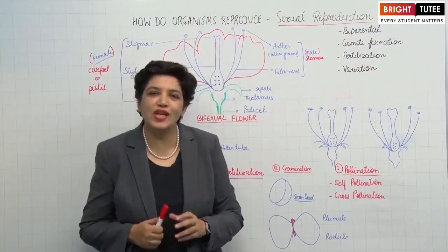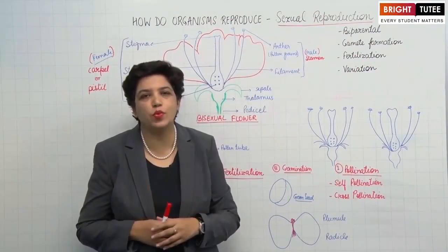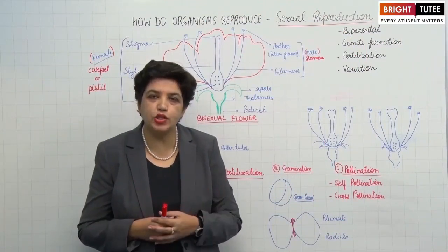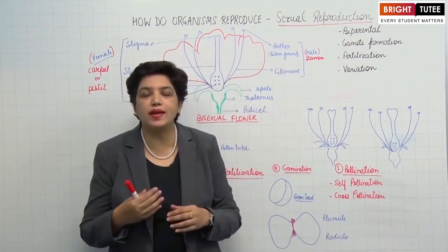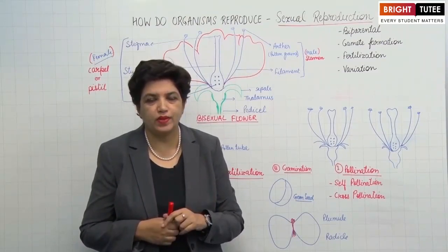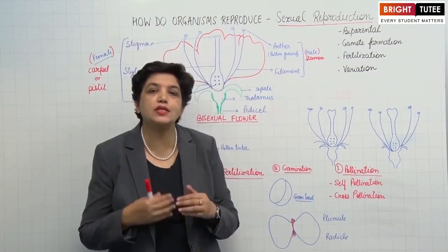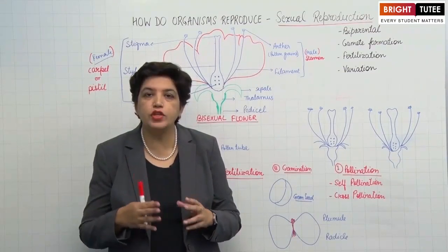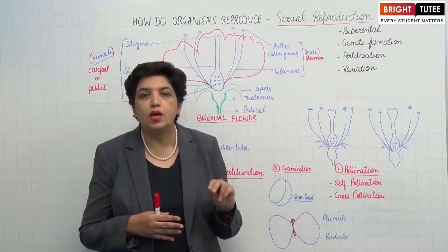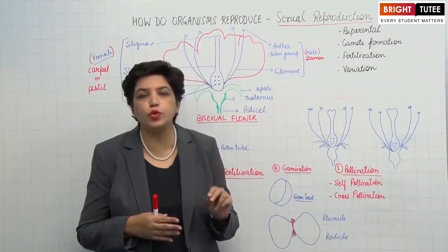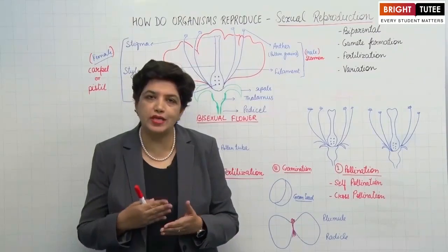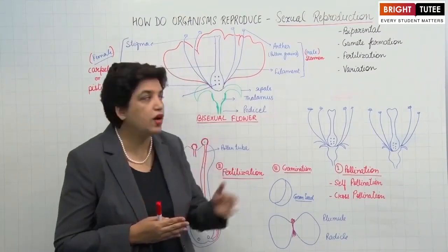We just discussed various modes of asexual reproduction. Now in the next section we'll study about another type of reproduction — sexual reproduction. Sexual reproduction is a mode of reproduction which involves two parents, the male and the female, with the formation and fusion of gamete cells.